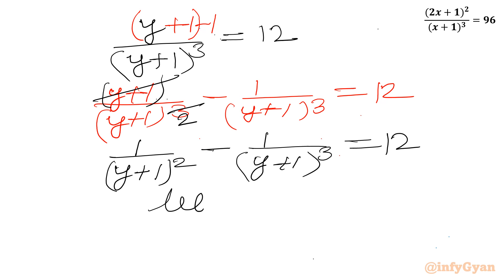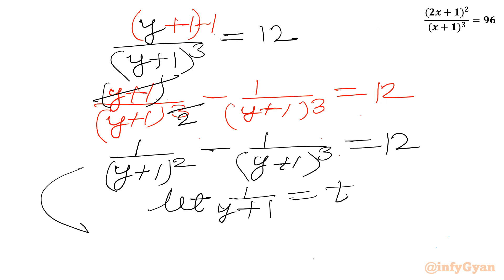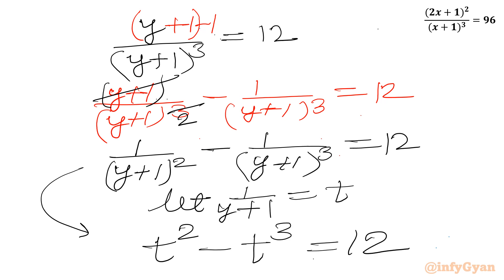Now the substitution is obvious: let t = 1/(y + 1). So our equation becomes t² − t³ equal to 12. Remember that t = 1/(y + 1) and 2x + 1 = 1/y.